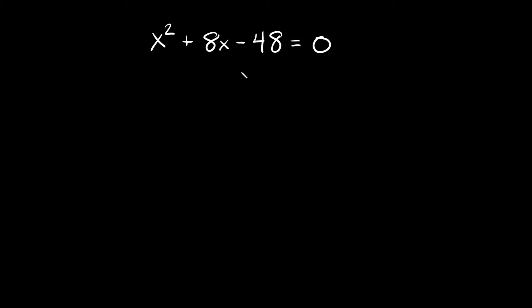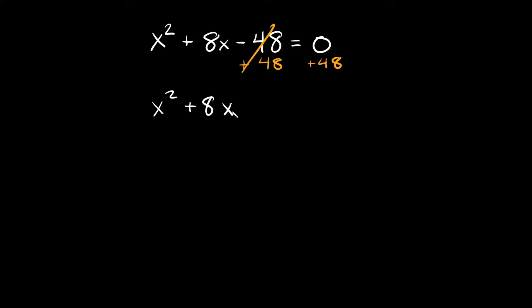What we have to do is move the constant to the other side. So we add 48 to both sides: they cancel out and we're left with x² + 8x = 48.